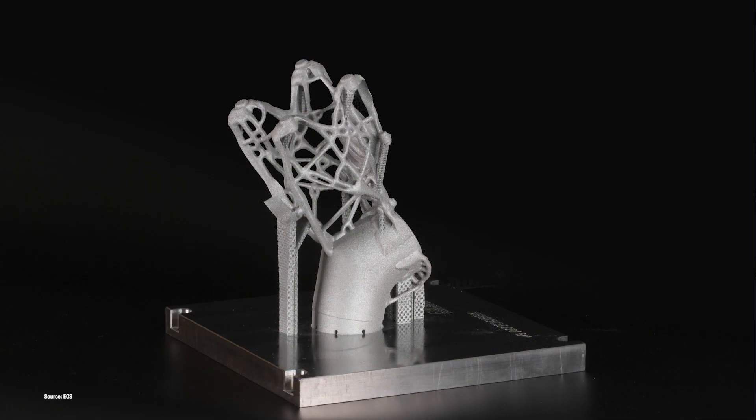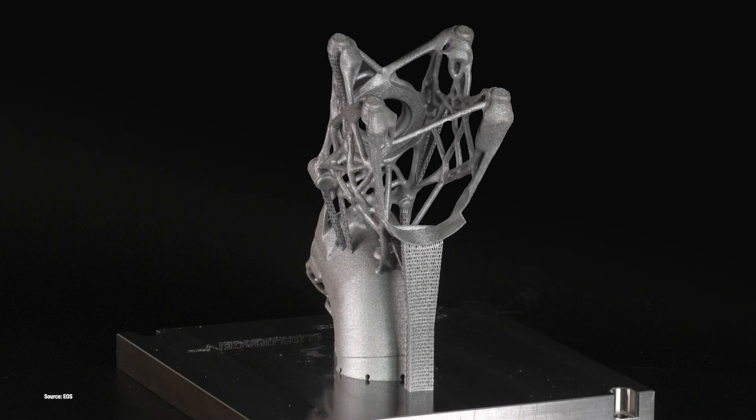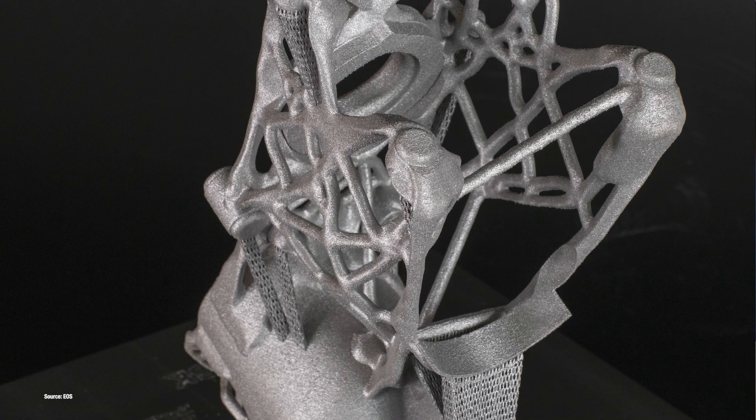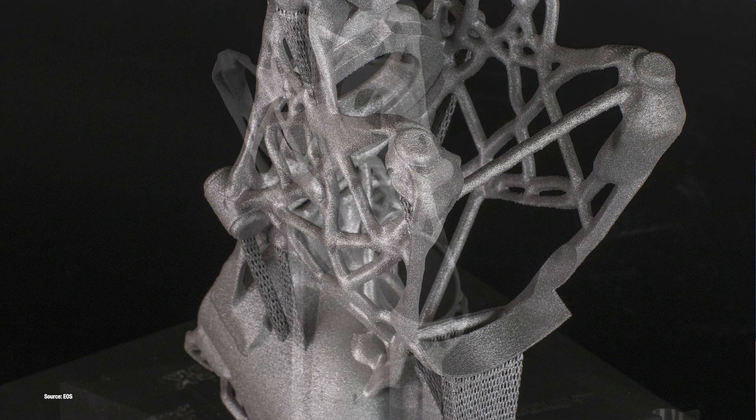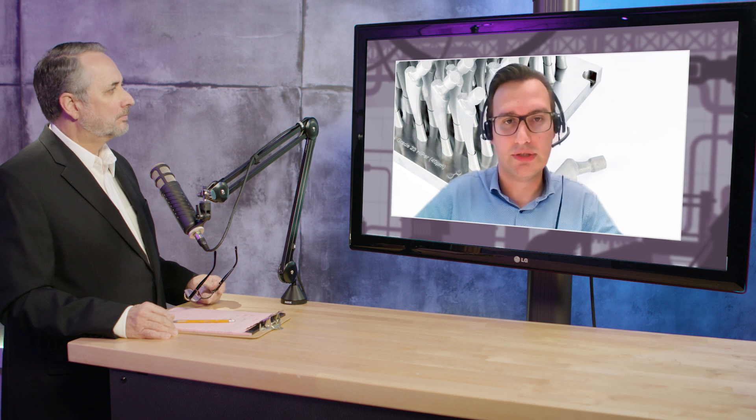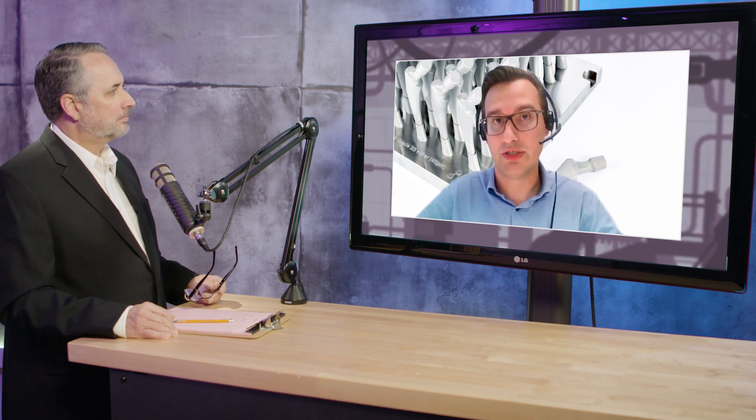The second reason for supports is that typically you work with some kind of recoating system, and that recoating system can put a little bit of force on your parts. Sometimes the supports are simply there to make sure that force doesn't result in a small deformation of your part or bumping of your part.